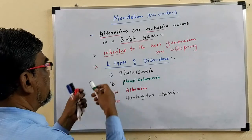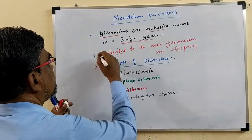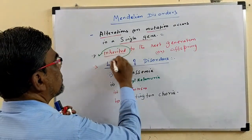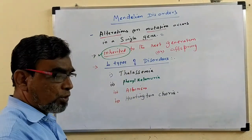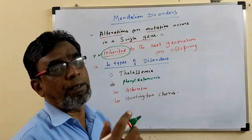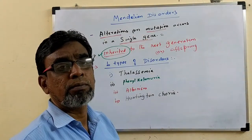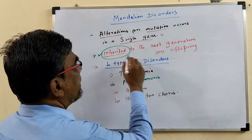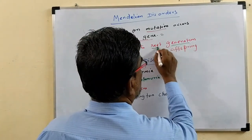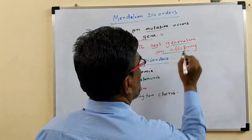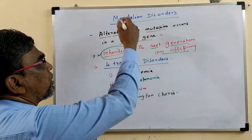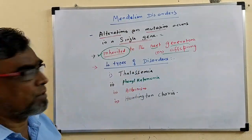These disorders present in the parent will automatically be inherited to the next generation. Inherited means it is transferred to the offspring. This is the characteristic of Mendelian Disorders.